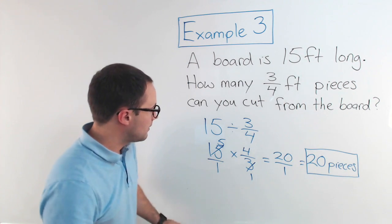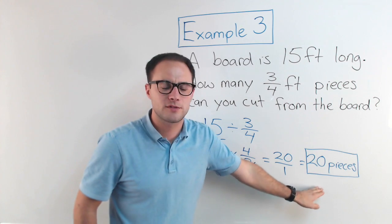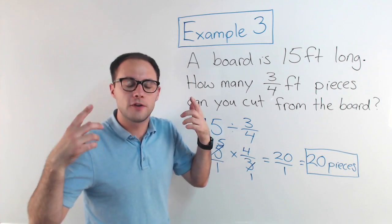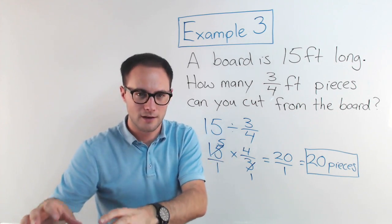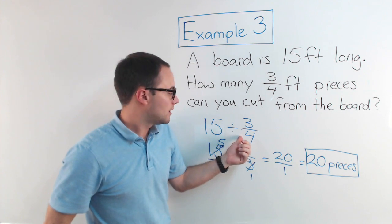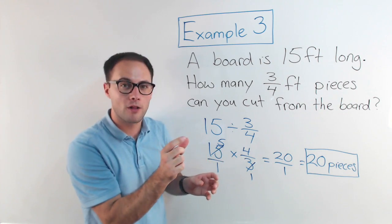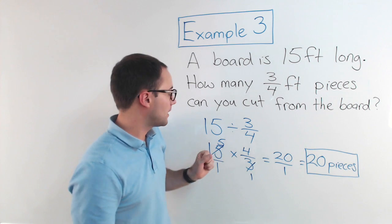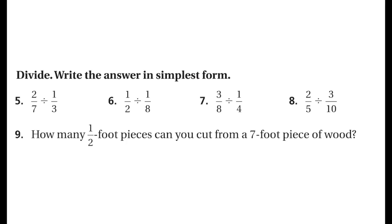You'll notice the value increased — we started with 15, divided by three-fourths, and ended up with 20. That's a little confusing at first because when you think division, you think you start with a bunch of things, divide them into groups, and get a number less than what you started with. But when you're dividing by a proper fraction — something less than one — your group is so small that you get many groups. Here are some more to try on your own. Thank you for watching, and as always, if you liked the video, please subscribe.